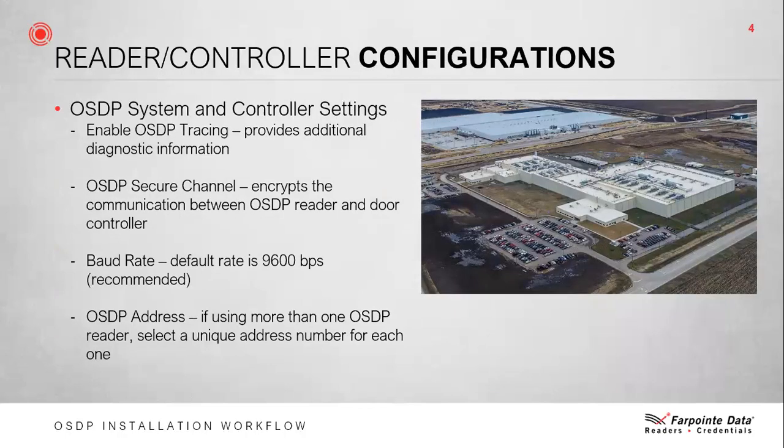Reader and Controller Configurations. Once you've agreed on the overall system details with your end users and are ready to move forward, you need to determine the OSDP capabilities of the system you're installing and how you plan to configure the communication between the controller and the readers. Configuration starts at the system software. Some of the more common OSDP settings include: enable OSDP tracing, which provides additional diagnostic information from the device wired to the controller if the software supports it; and OSDP secure channel, which encrypts the communication channel between the OSDP reader and the door controller.